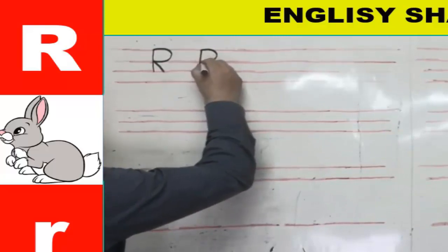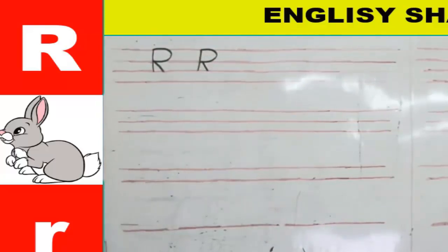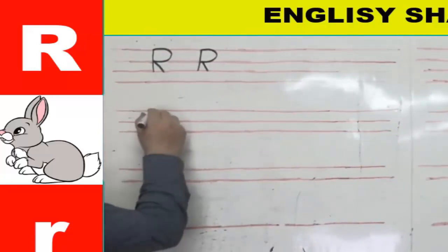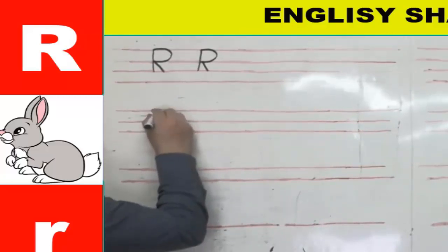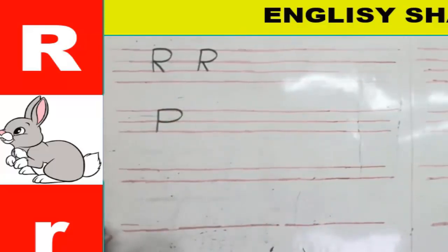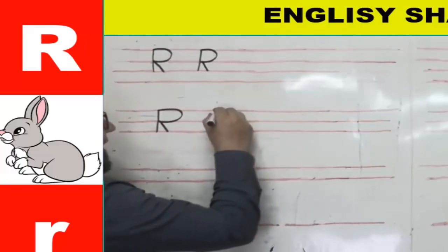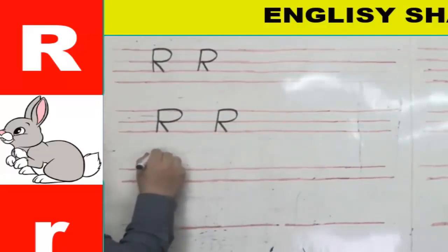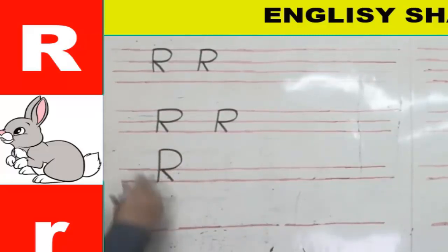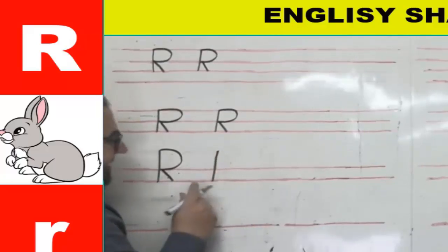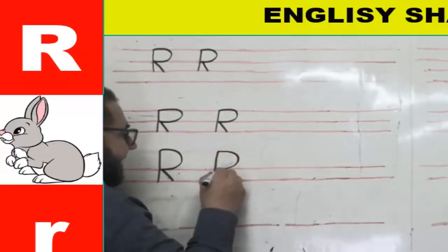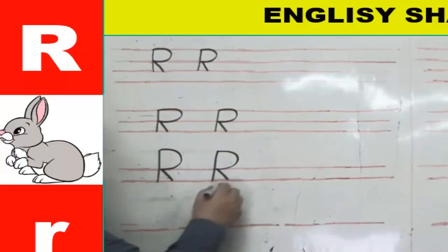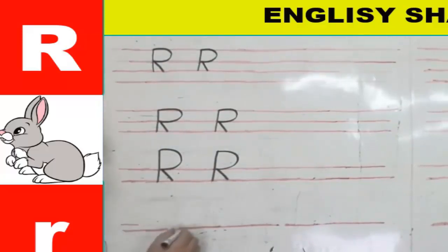On three lines, start from line one straight down to line three, curved line to line two, then a diagonal line — straight, curved, then diagonal. On two lines, start above the two lines, come down to line two, then the curved line, then the diagonal line down to line three. Capital R sits above the line.